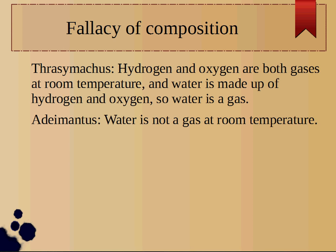And for the third example, Thrasymachus decides to get into science. He says that because hydrogen and oxygen are both gases at room temperature, and water is made up of hydrogen and oxygen, water must be a gas at room temperature. Adamantus doesn't really go into explaining why water isn't a gas — he just says water is not a gas at room temperature. I think most of you will find that pretty easy to believe.